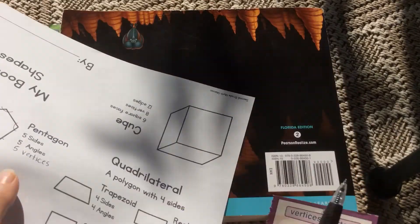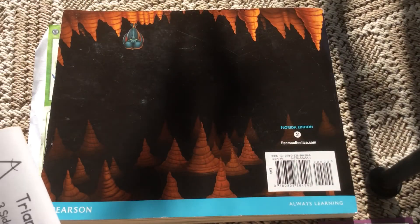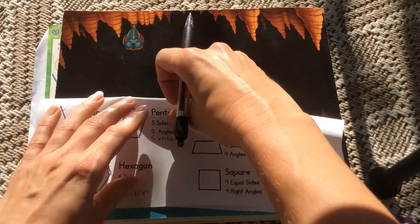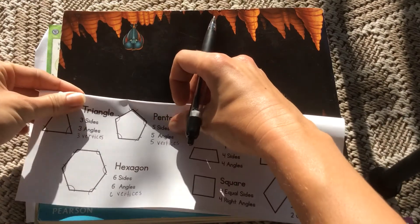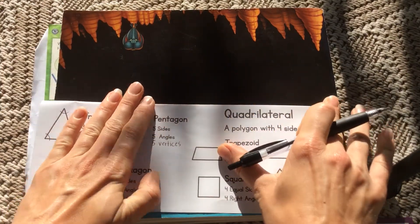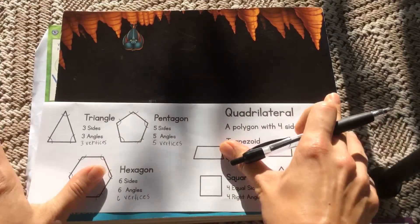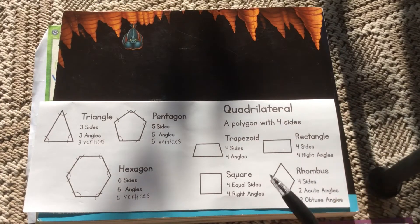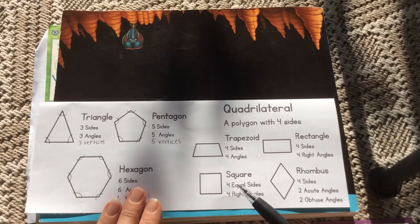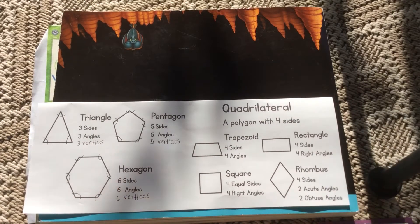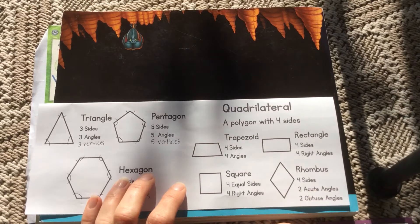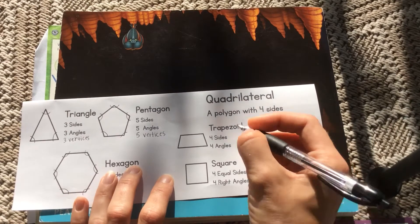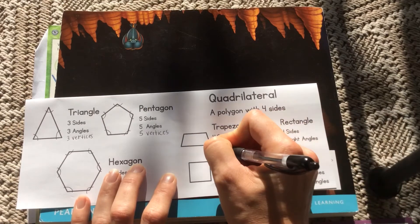Well, four-sided shapes are called quadrilaterals. You may be really familiar with some certain quadrilaterals like square and rectangle, but any shape that has four sides, four vertices, and four angles is called a quadrilateral.